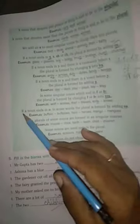Next rule: if a noun ends in 'o', in some words the plural is formed by adding 'es'. For example, buffalo becomes buffaloes, hero becomes heroes, mango becomes mangoes.